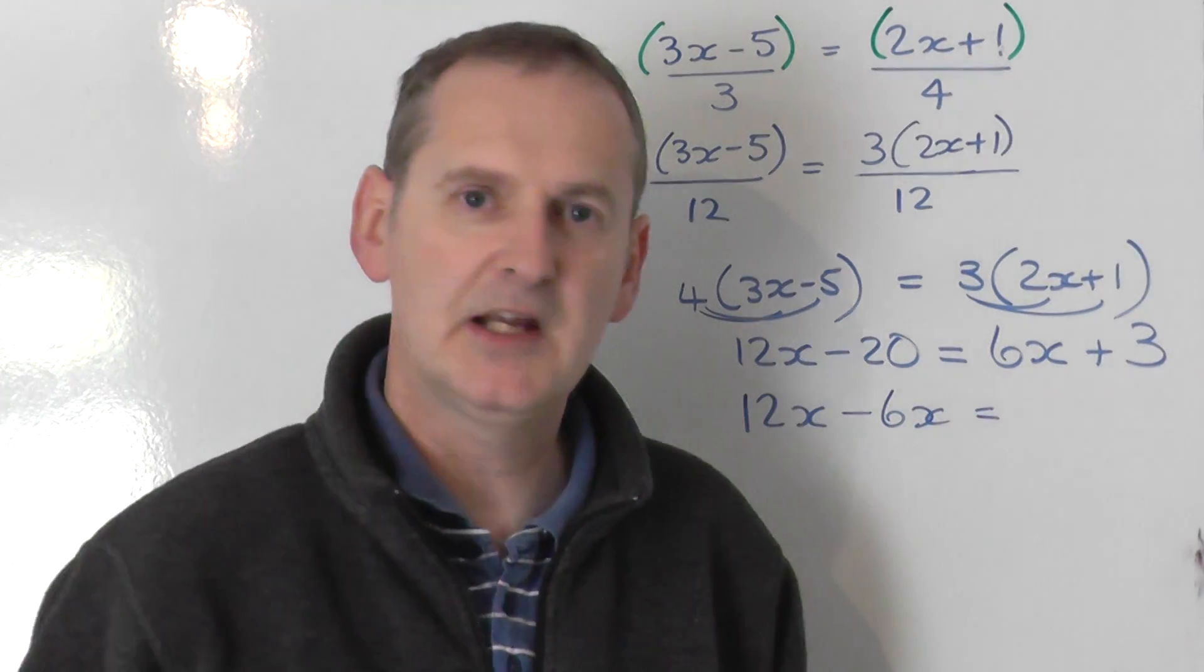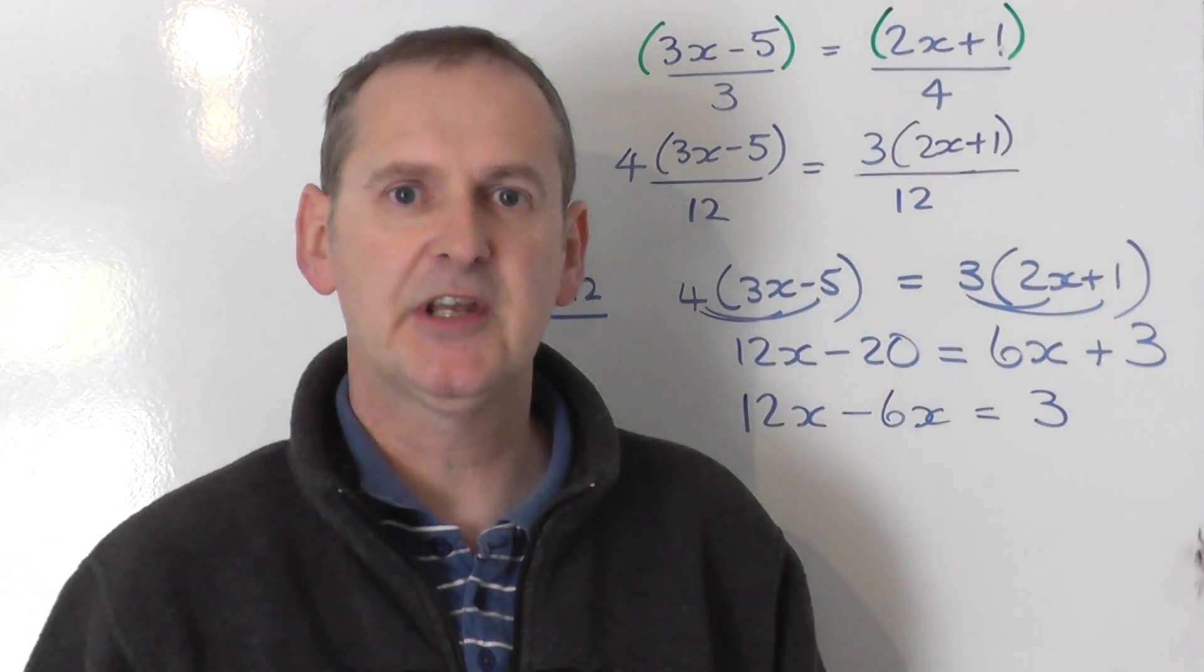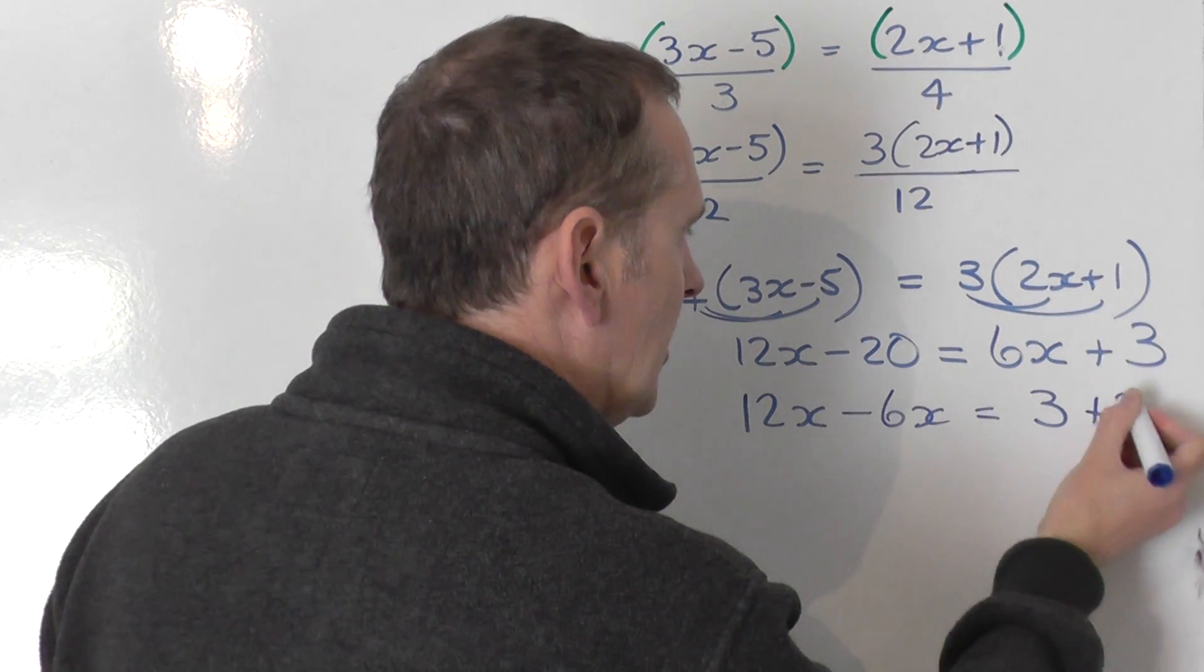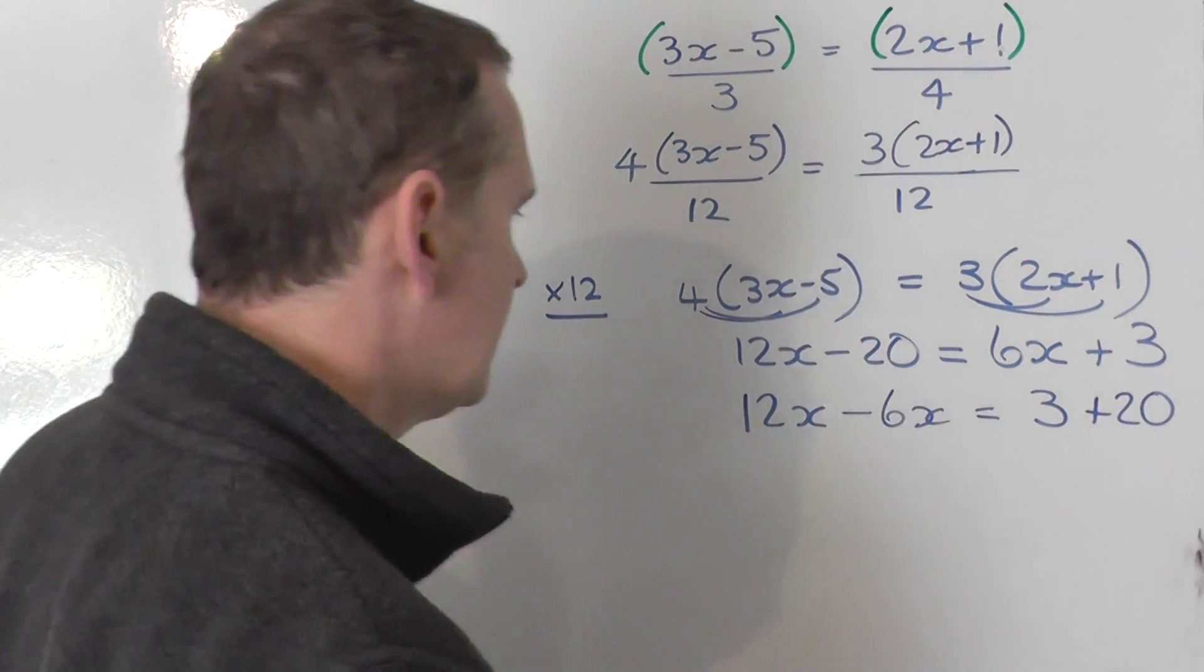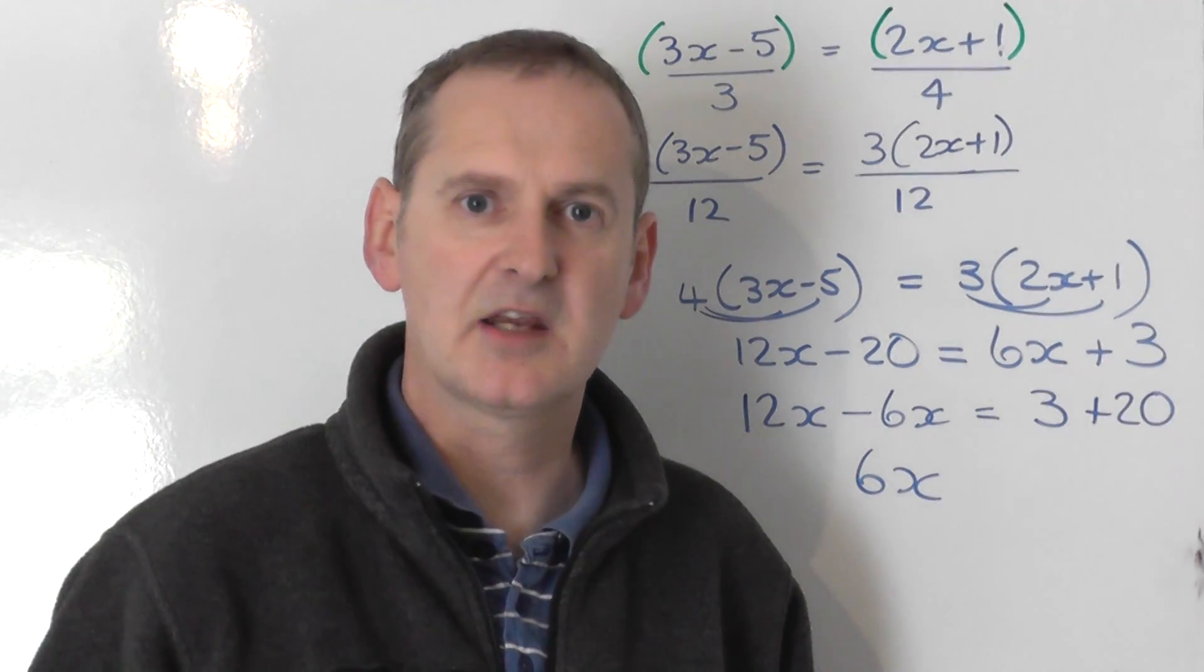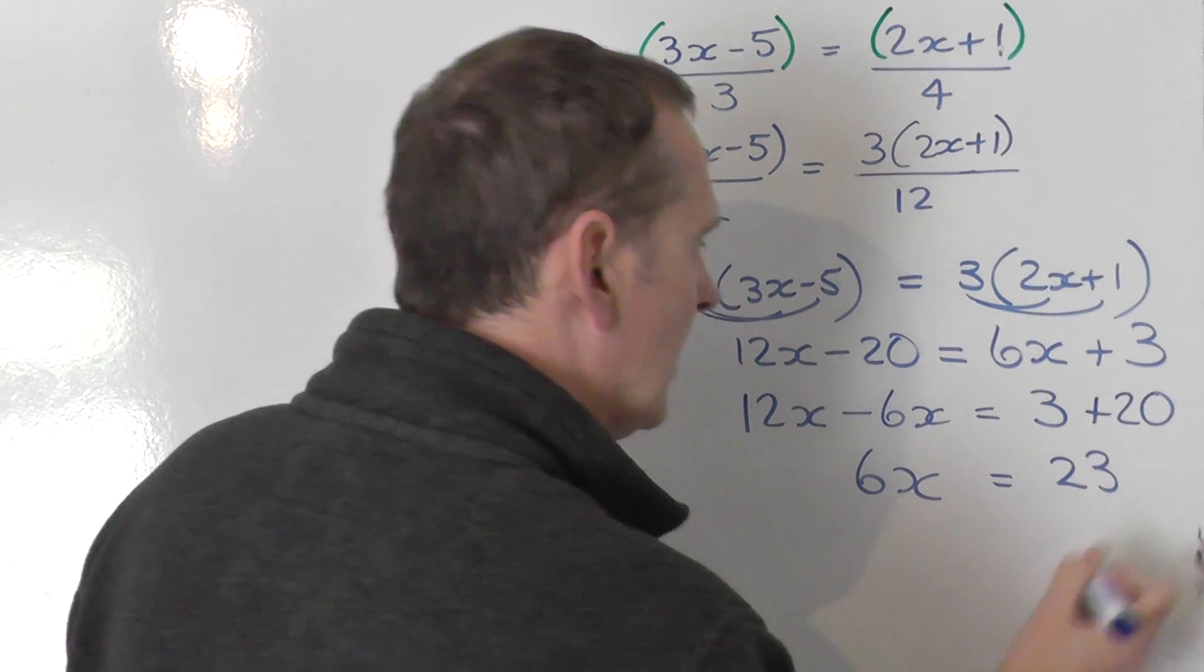Equals. Numbers go to the right. The plus 3 stays as plus 3. I can drop the plus if it's the first thing I write down. And then the minus 20 goes over and changes to plus 20. Tidy up. 12x take away 6x is 6x. Equals 3 plus 20, 23.